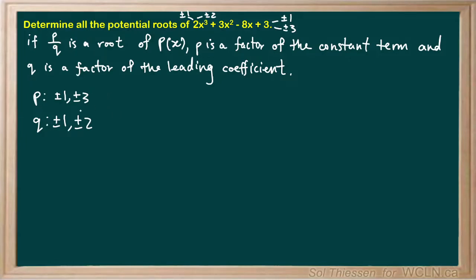Now we have to combine all the p's and q's in all possible combinations to determine the potential roots. The way I like to do this is to look at the absolute values of the p's and q's, combine them, and then add plus and minus.